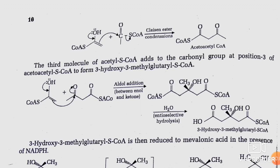A third molecule of acetyl-S-coenzyme A adds to the carbonyl group at position 3 of acetoacetyl-S-coenzyme A to form 3-hydroxy-3-methylglutaryl-S-coenzyme A (HMG-CoA). All these processes take place through aldol-type condensation between enol and ketone. After enantioselective hydrolysis, there is formation of 3-hydroxy-3-methylglutaryl-S-coenzyme A.